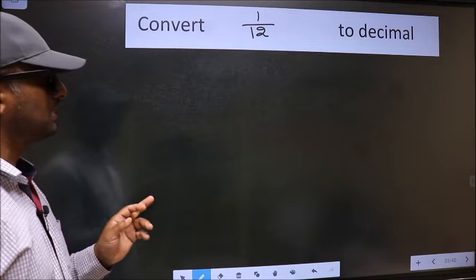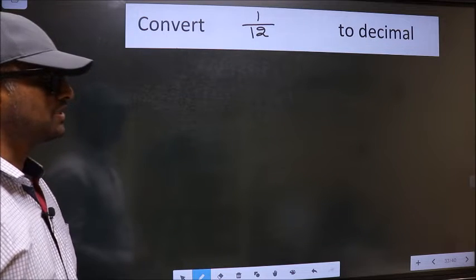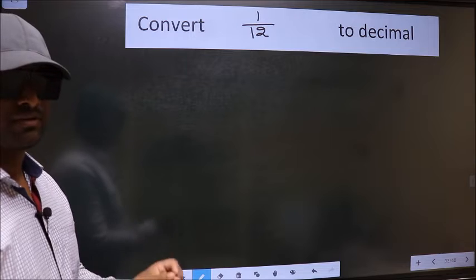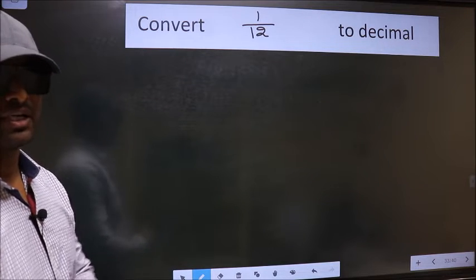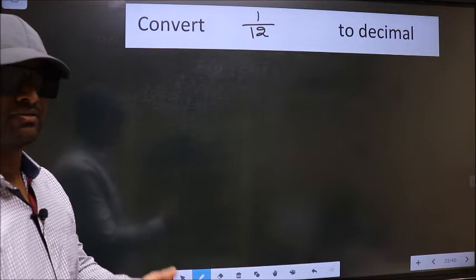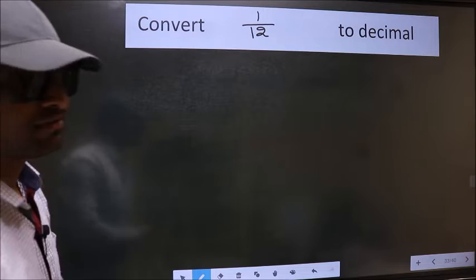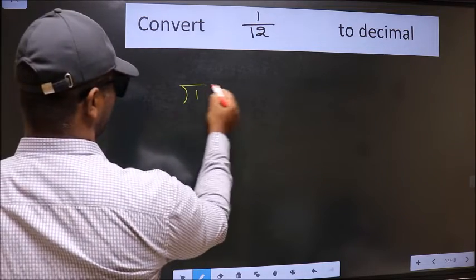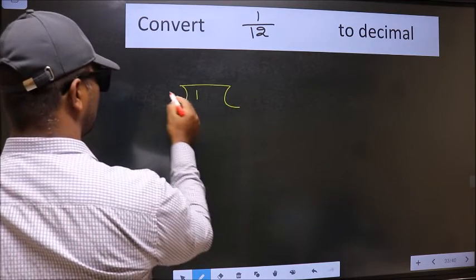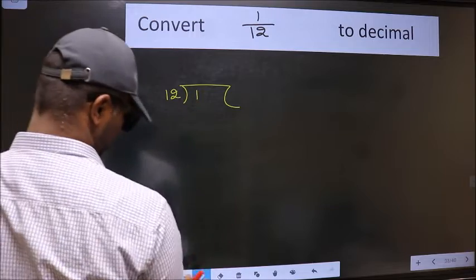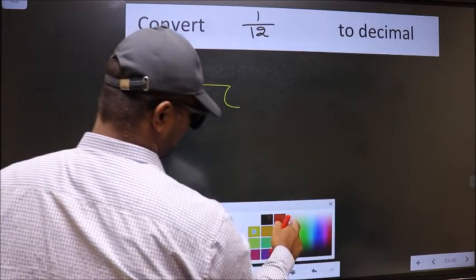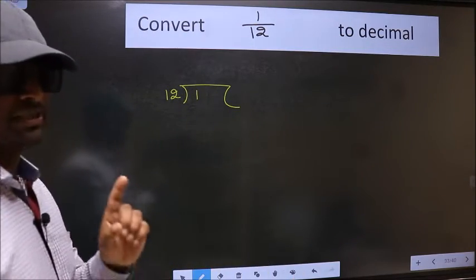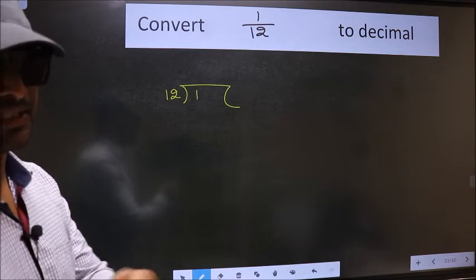Convert 1 by 12 to decimal. To convert to decimal, we should divide it. And to divide, we should frame it in this way, with 1 here and 12 here. This is step 1.